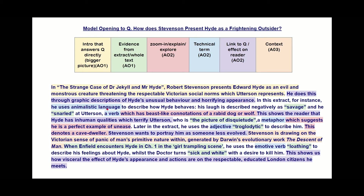We then get some terminology — 'animalistic language' — and examples of that: nicely embedded quotes, just one word: 'savage' and 'snarled'. Some more subject terminology — a verb — and the effect this has with deeper language analysis. This shows the reader about the inhuman qualities. Another embedded quote, another piece of subject terminology, and more analysis. I then link an idea from the start of the extract to something later in the extract — 'troglodytic' — an embedded quote and adjective as subject terminology, with the effect explored as well.